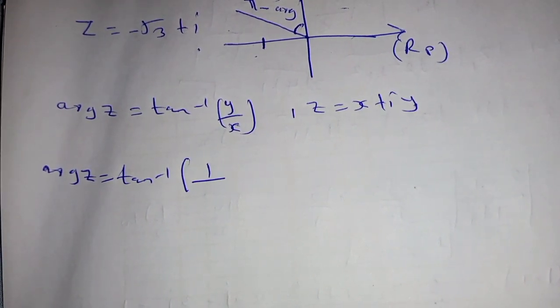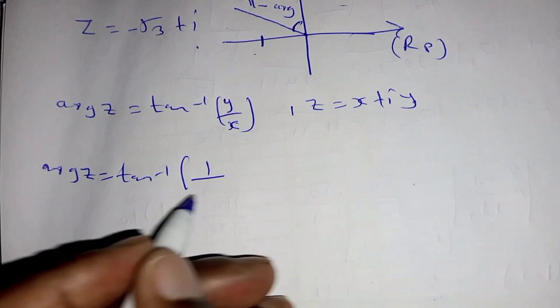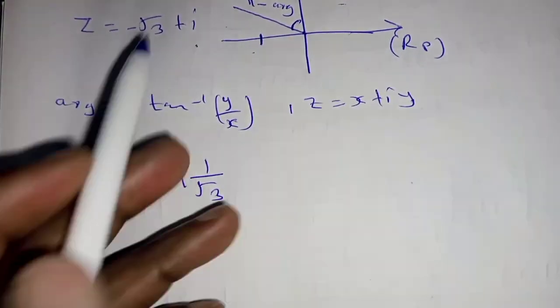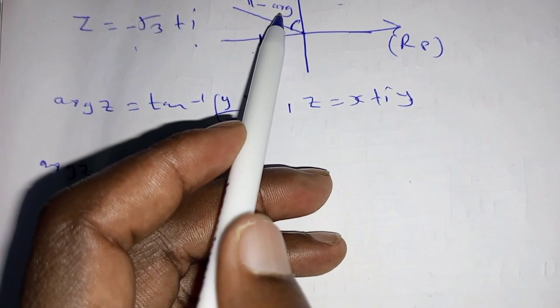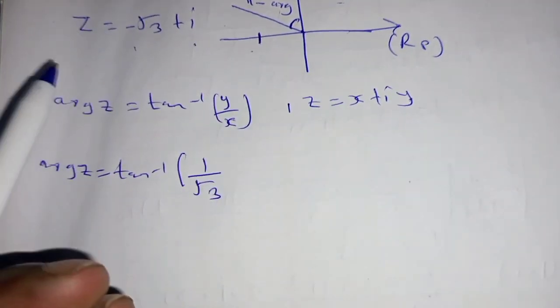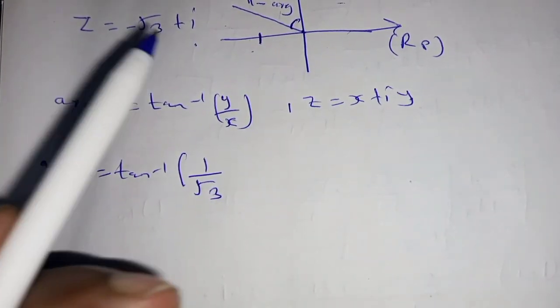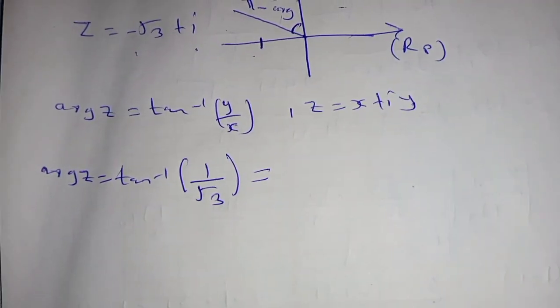...divided by root 3. The negative just depicts the location whereby we are seeing it is in the second quadrant, where the tan in the second quadrant is negative.